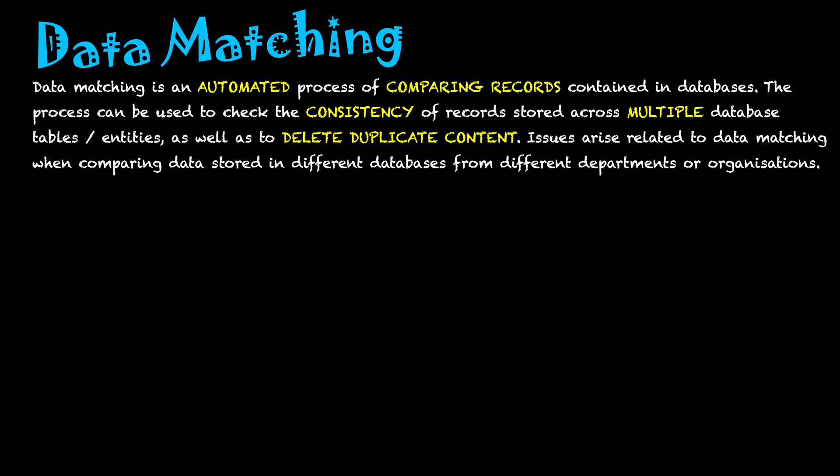Issues arise when comparing data stored in different databases from different departments or organizations. A person might have data about themselves stored on one database and also on a different database elsewhere. For integrity purposes, these two databases may be checked against each other to verify that an individual's data is correct.